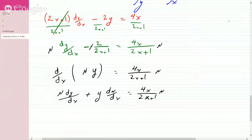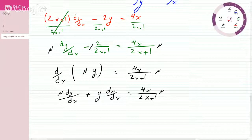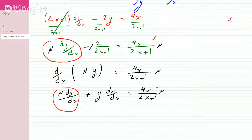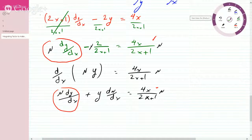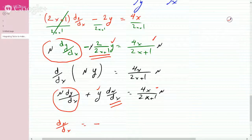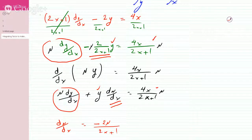Now if you compare, this term is the same as this term. The y dmu/dx term has to equal mu times negative 2 over 2x plus 1. So dmu/dx has to equal negative 2mu over 2x plus 1. Now you can use separation of variables to figure out what mu is — the integrating factor.